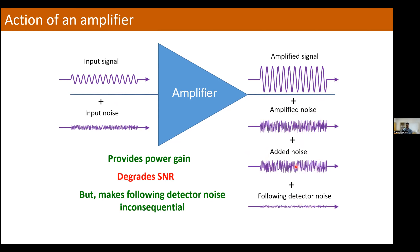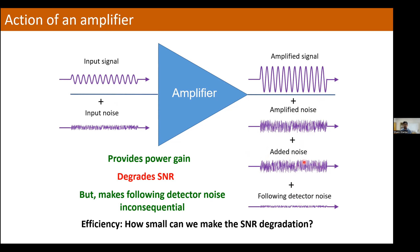This automatically gives us a concept we can call efficiency: how small can we make this extra SNR degradation, and how can we minimize the price we have to pay to get an SNR as close as possible to the SNR available at our input? Can we make amplifiers with the minimum possible added noise? This concept — the minimum added noise of a microwave amplifier — is called the quantum limit, and is expressed in photon number units as saying that a quantum-limited amplifier adds half a photon of noise. Any real amplifier will in general add slightly more, or much more, than half a photon of noise depending on how it's constructed.